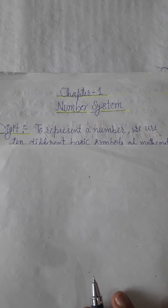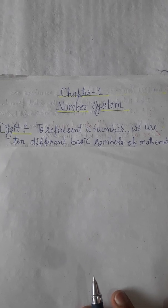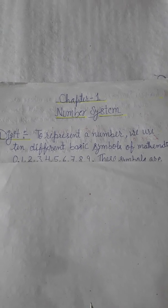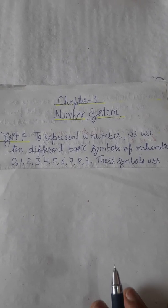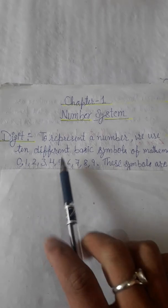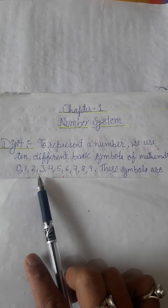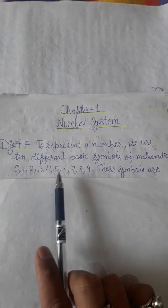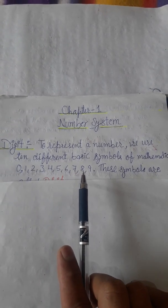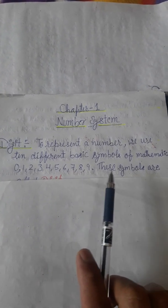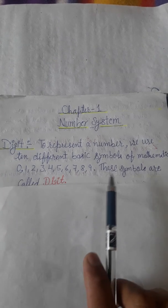Digit: Digits are symbols. Generally in mathematics, we have ten symbols you can see here: 0, 1, 2, 3, 4, 5, 6, 7, 8, 9. These symbols are called digits.